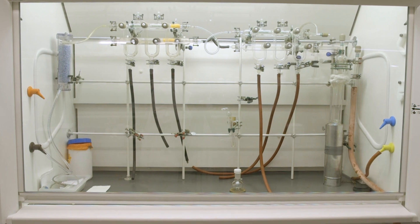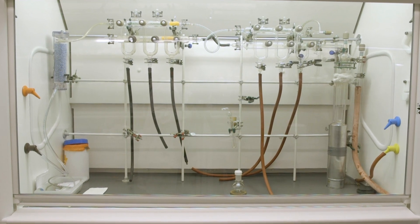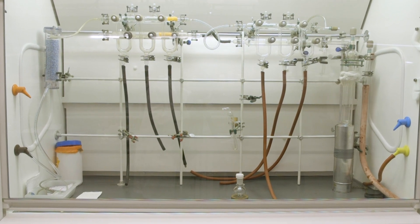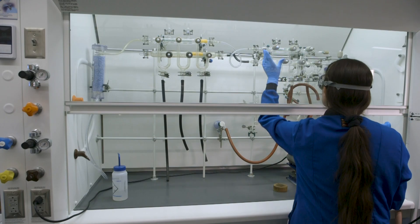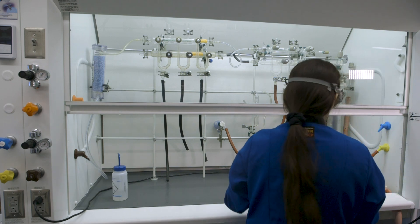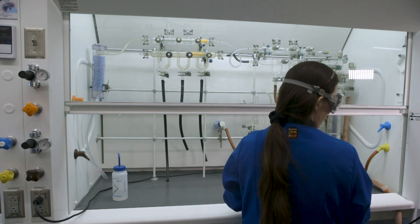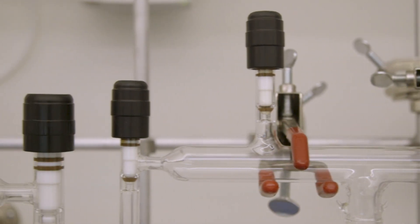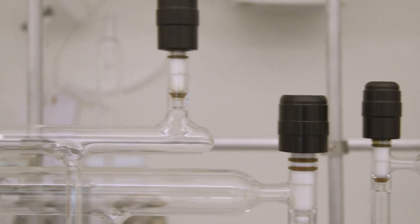A closed system inside a fume hood, such as a Schlenk line, is an alternative option for the use of pyrophoric materials. Many pyrophoric chemicals release noxious or flammable gases upon decomposition and are often stored with a solvent. Both are reasons which require the proper ventilation of a fume hood.